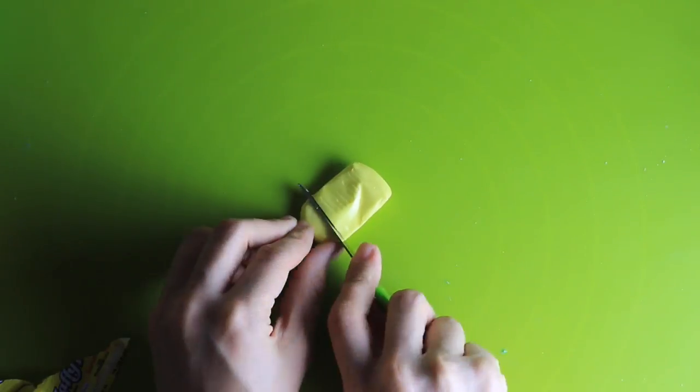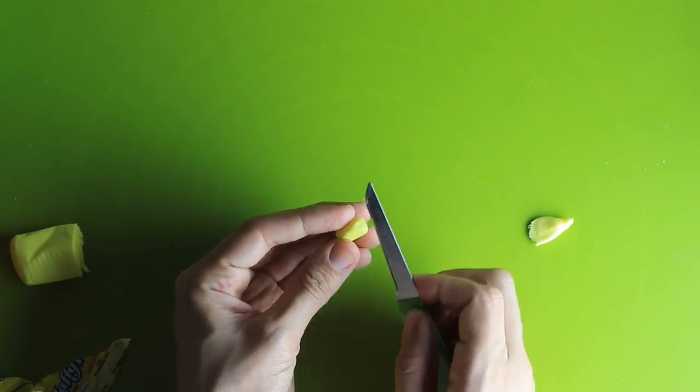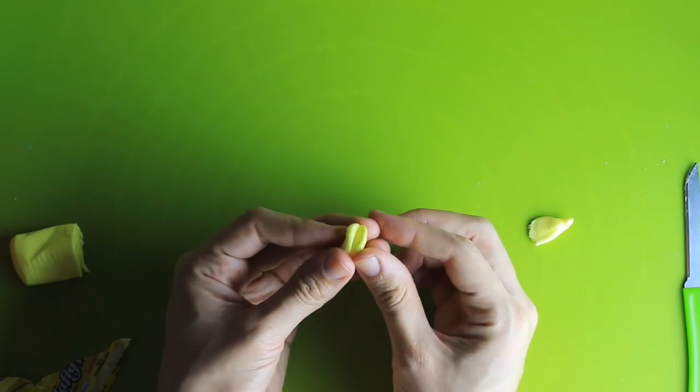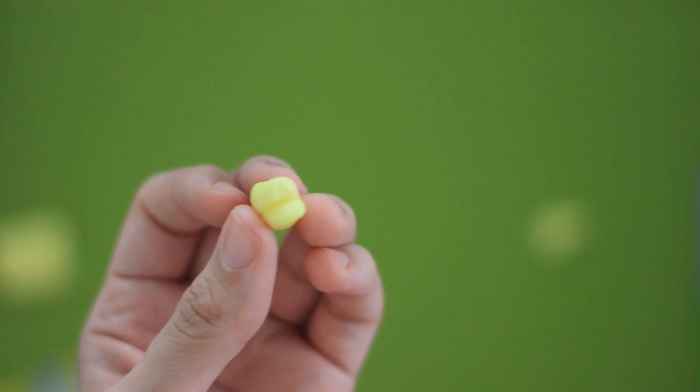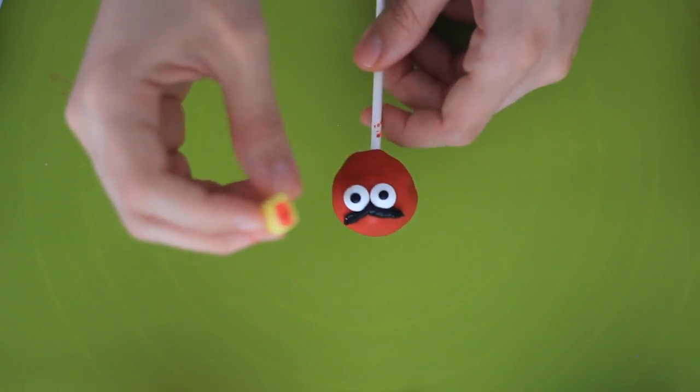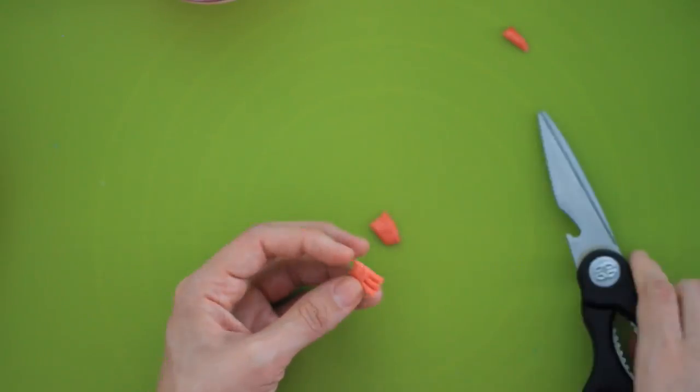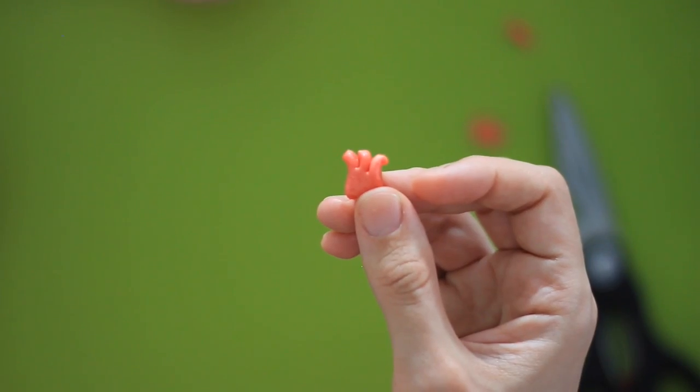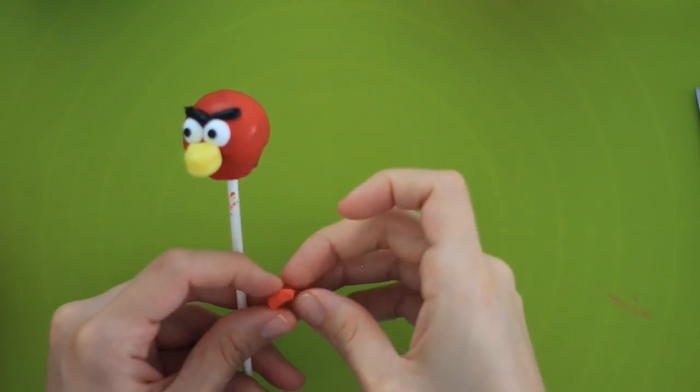Use a yellow Laffy Taffy. Cut a piece and shape it into a beak. Use the red candy melt to stick the beak on the face. Cut a piece of the red cherry airhead to use as a feather. Place it on his head.